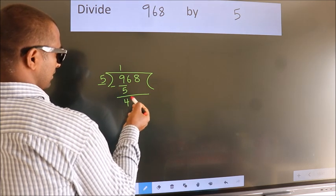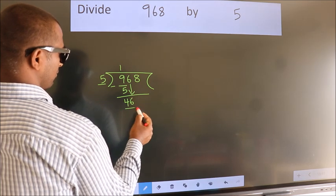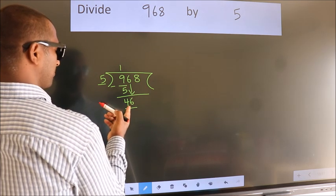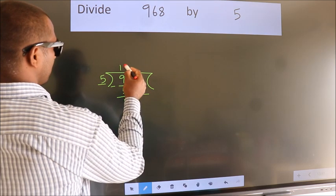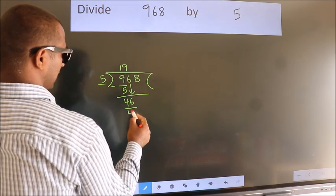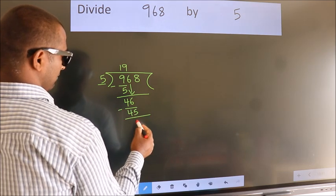After this, bring down the beside number. So, 6 down. So, 46. A number close to 46 in 5 table is 5 nines 45. Now, we subtract. We get 1.